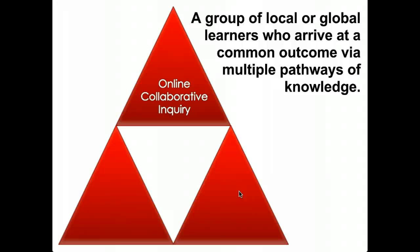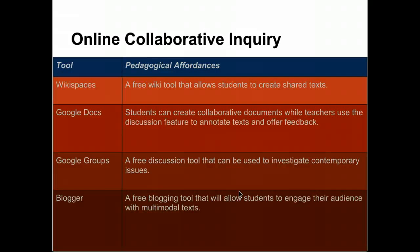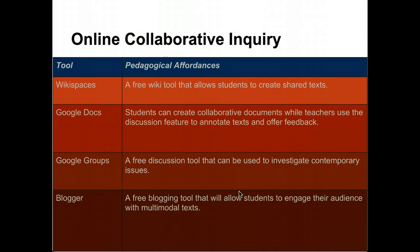The first level is Online Collaborative Inquiry. We define Online Collaborative Inquiry as a group of local or global learners who arrive at a common outcome via multiple pathways of knowledge. Specifically, students are co-creating and co-constructing text and learning together — it's really social constructivism using digital text and tools. Tools we use include Wikispaces, Google Docs and Google Apps for educators, Google Groups and Google Communities on Google Plus, and blogging tools.